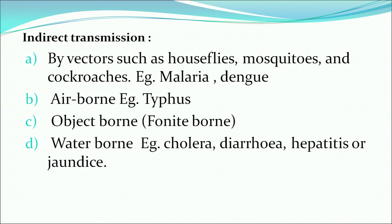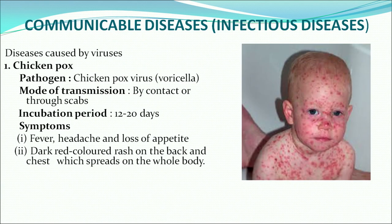Indirect transmissions include bi-vectors such as house flies, mosquitoes and cockroaches. Very common examples are malaria and dengue. Then you have airborne diseases — example is typhus. You also have fomite-borne and waterborne diseases — examples include cholera, diarrhea, hepatitis or jaundice. Now we will discuss all these diseases one by one in detail.